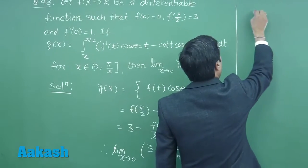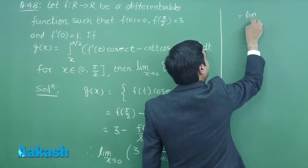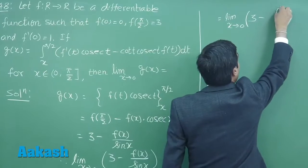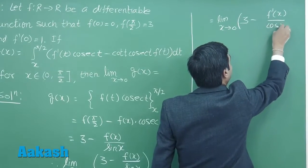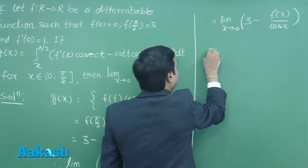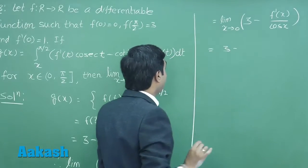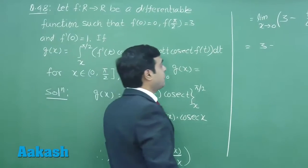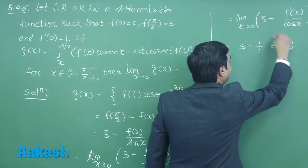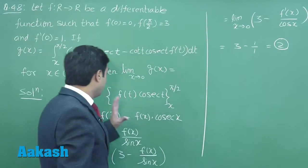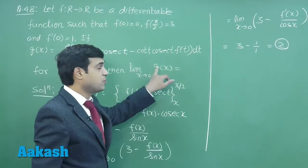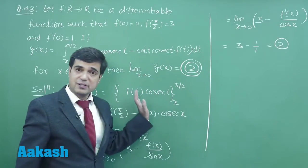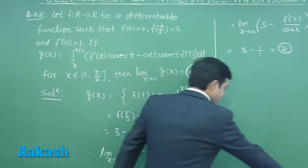lim(x→0) [3 - f'(x)/cos(x)]. Substituting the limit, we get 3 - f'(0). The value for f'(0) is given to us as 1, right? So we get 3 - 1/1 or simply the result as 2. So the required value lim(x→0) g(x) equals 2. This point is clear. Okay, let's move to the next question.